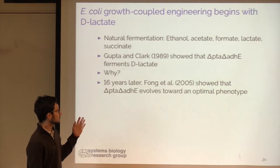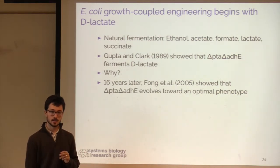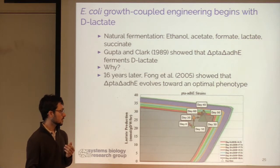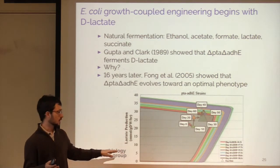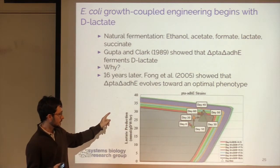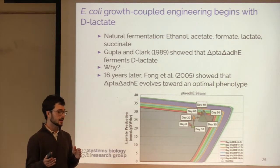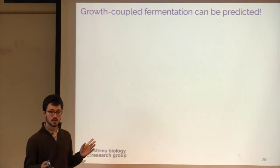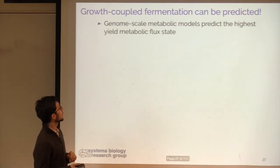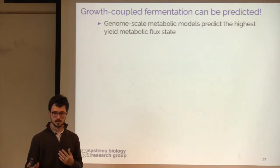16 years later, Steve Fong showed that if you take the same design — the PTA and ADHE knockout — and build that strain in E. coli and then let it evolve, the evolution will actually track the predictions of a genome-scale model. On the production envelope, the x-axis shows growth rate, y-axis shows lactate production, and the shaded envelopes represent the solution space. As the PTA/ADHE knockout grows, it moves towards the edge of that envelope over a 50-day evolution. The main result is that we can predict growth-coupled fermentation using genome-scale models.